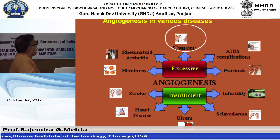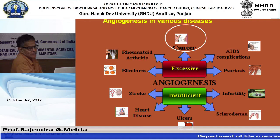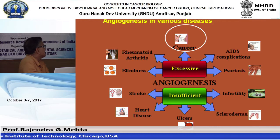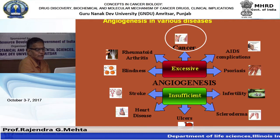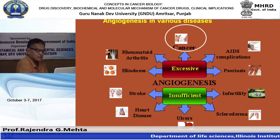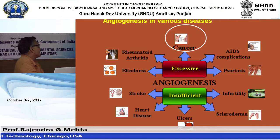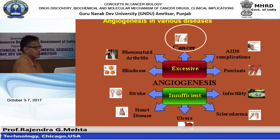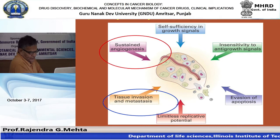Angiogenesis has two states: excessive or insufficient. Excessive angiogenesis is related to many diseases including cancer, AIDS, rheumatoid arthritis, blindness, and psoriasis. Insufficient angiogenesis occurs in stroke, ulcers, and infertility. Cancer is a disease of excessive angiogenesis, not a shortage of it.